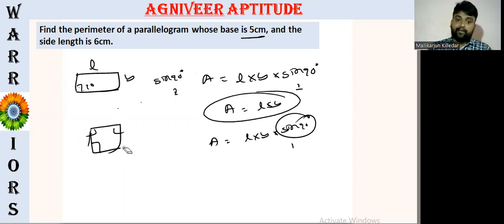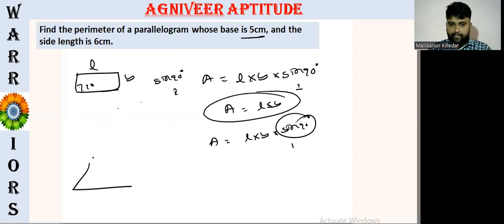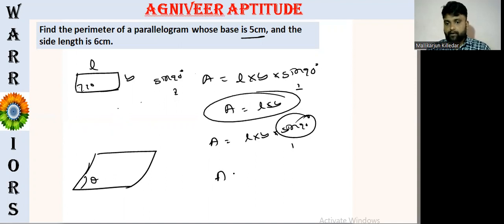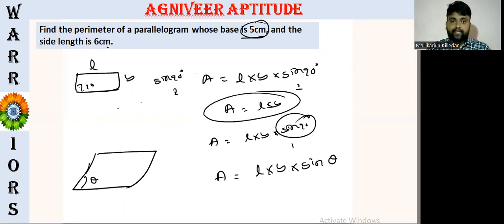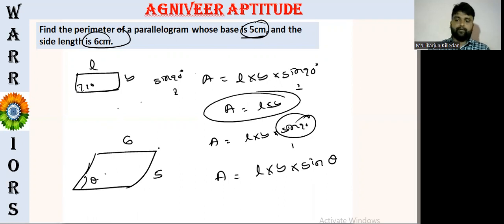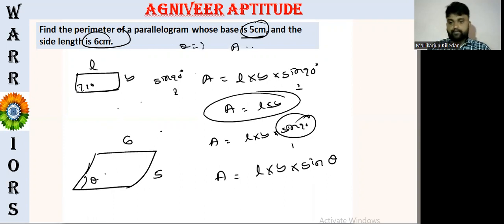From the parallelogram, the square is a tilt nicely. This rectangle is a little rectangle. So we will get a little bit of theta.